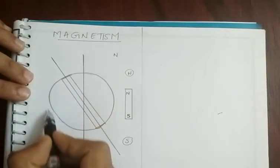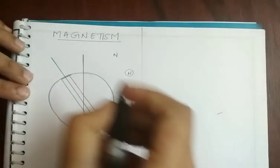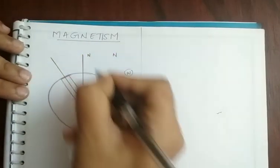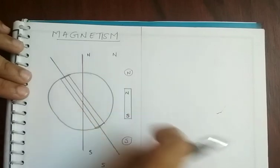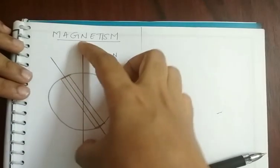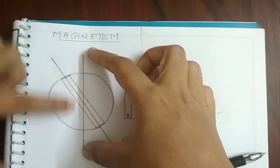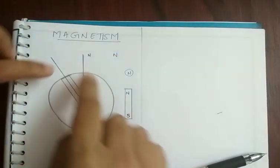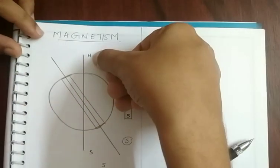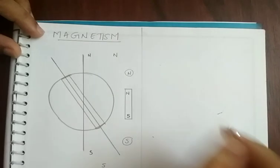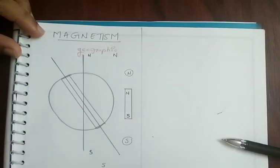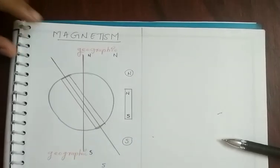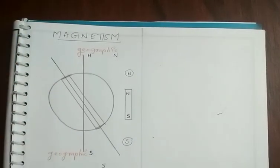So suppose this is our earth. The earth has a geographic north pole and a geographic south pole. This is the north pole and south pole about which the earth is rotating. This north pole is known as the geographic north, and this one is the geographic south pole. This is the geographic north pole and geographic south pole we are using in the maps.